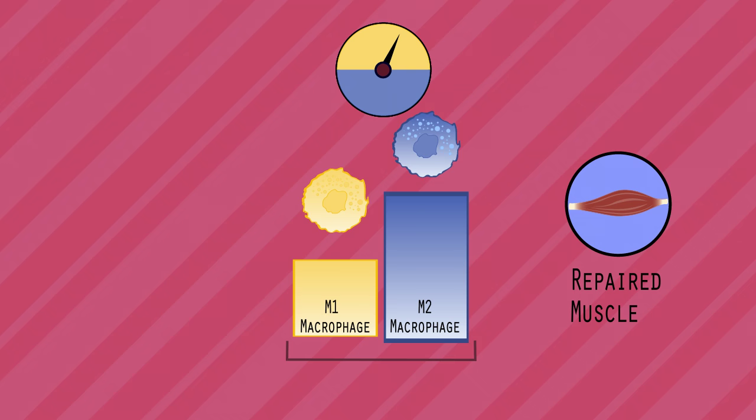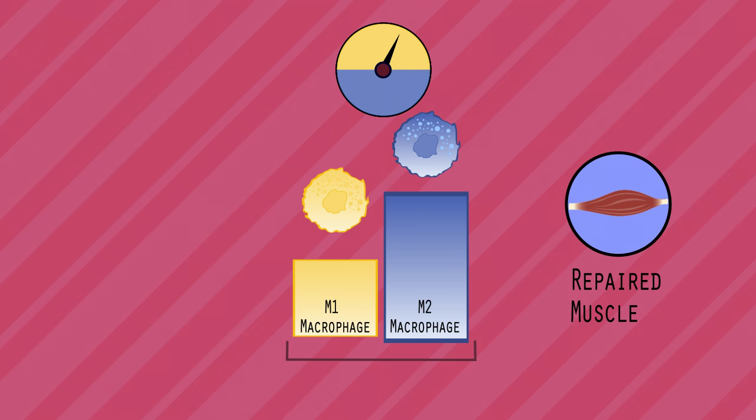If M2 macrophages expand prematurely, however, excessive matrix deposition is observed as a result of FAP survival and differentiation. The tissue is then unable to restore itself.